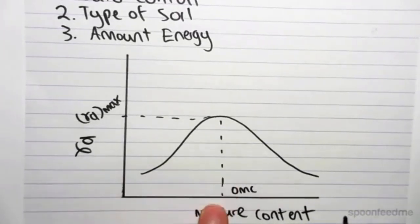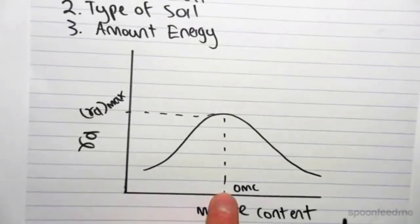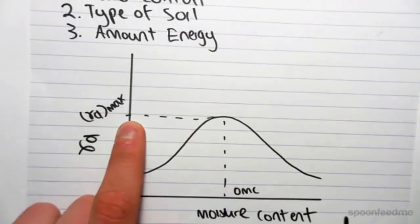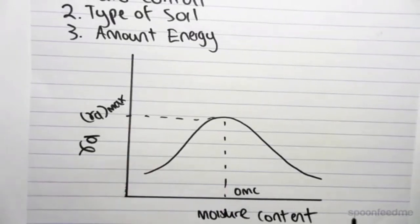We have a point which is the optimum moisture content, so the optimum amount of moisture in our soil sample, which is going to give us the best compressive stress, right? The best strength.